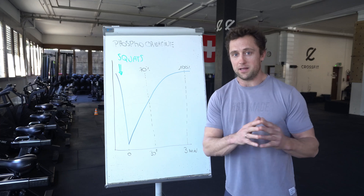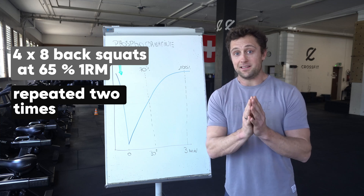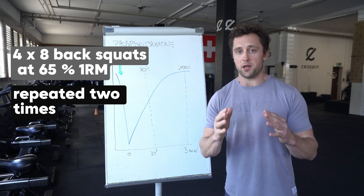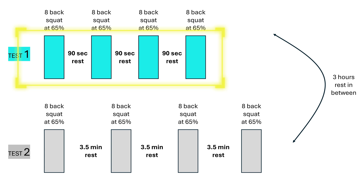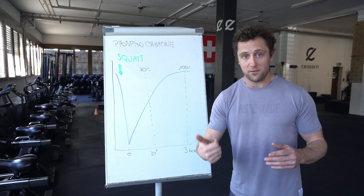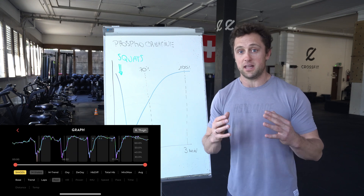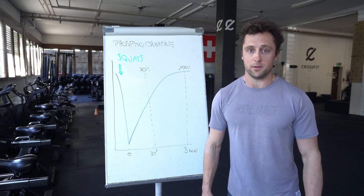What I'm going to do in my experiment is perform two rounds of four sets of eight back squats at 65 to 70% of my one rep max. In one round I will rest 90 seconds between each set — so not fully recovering my phosphocreatine stores — and in the other round I will rest three and a half minutes between each set, and see how it feels and how the oxygen delivery and consumption compare during the sets and during recovery.